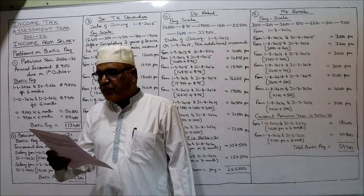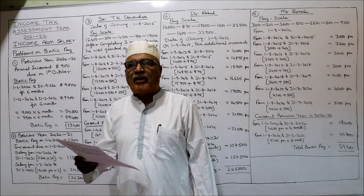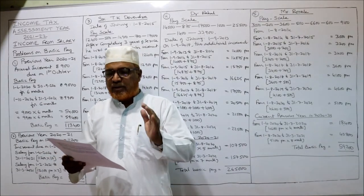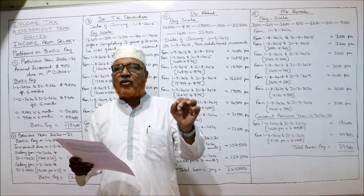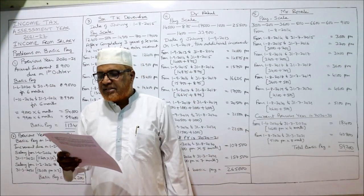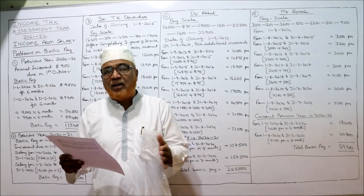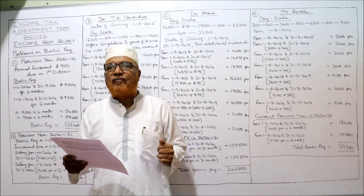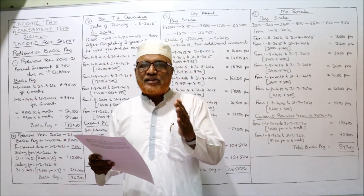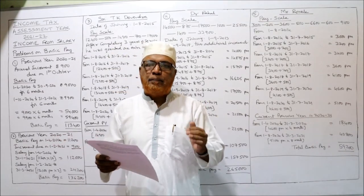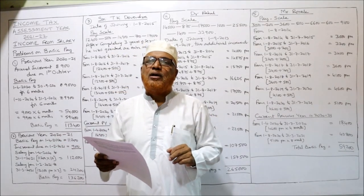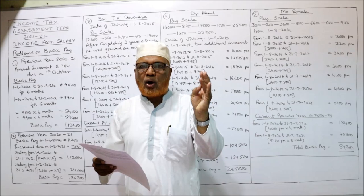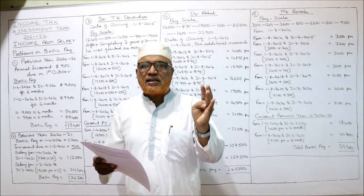Calculate the total basic pay for the previous year 2021. Remember our current assessment year is 2021-22, so the previous year is 2021. We have to compute the basic pay for PY 2021 if the basic pay on 1st April 2020, beginning of the year, is 9,000 and an annual increment of 900 rupees is due on 1st October. So our year begins from 1st April and up to September no increment applies.